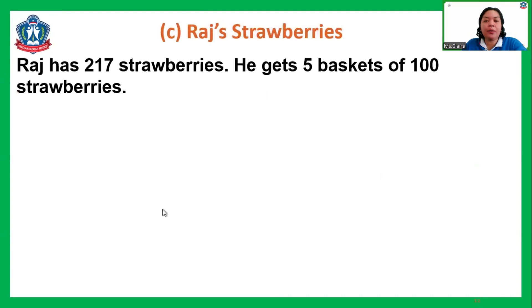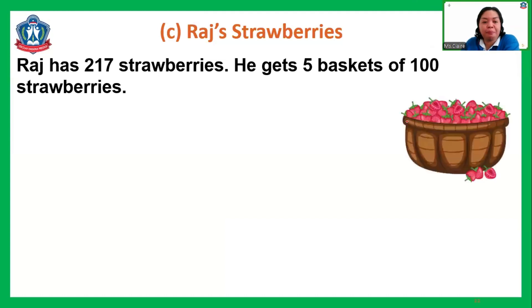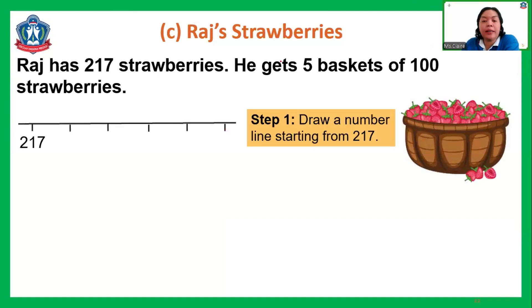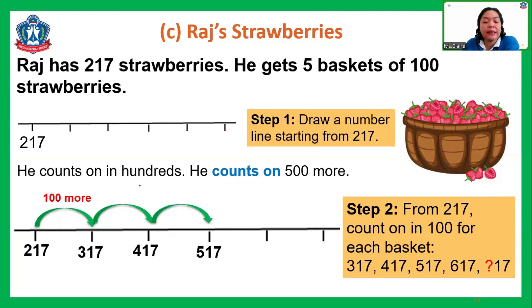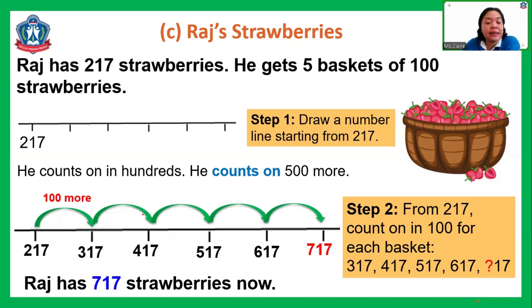Now let's look at Raj's strawberries. Raj has 217 strawberries and gets 5 baskets of 100 strawberries, which means 500 more. We use a number line and count on by 100: 317, 417, 517, 617, and 717. So Raj now has 717 strawberries. What do you notice, P3 — which digit changed?